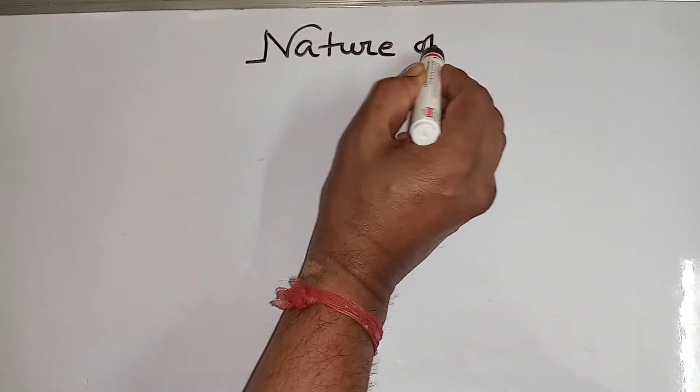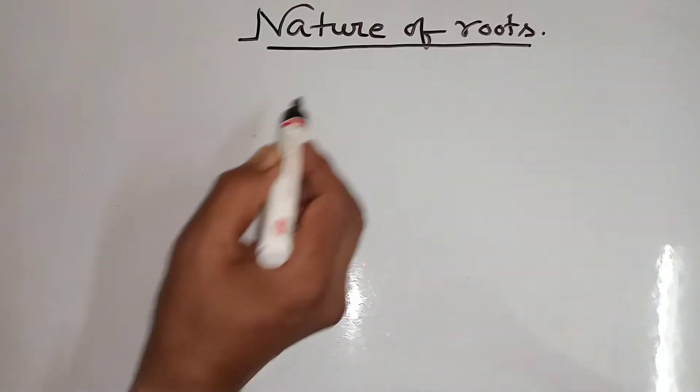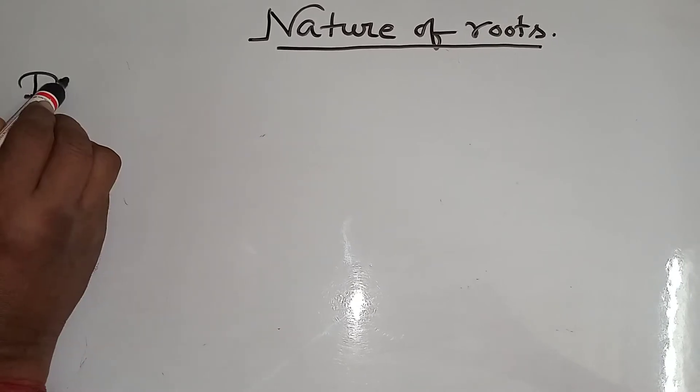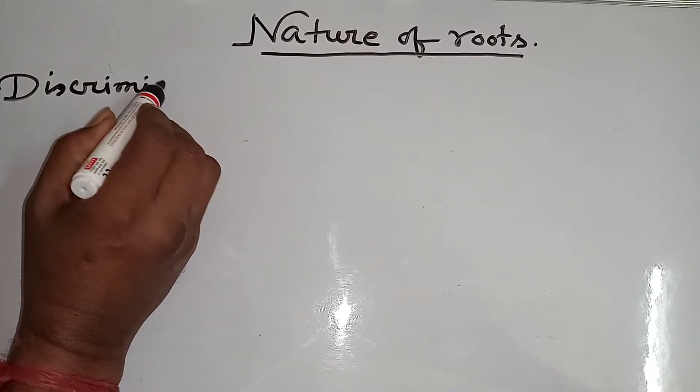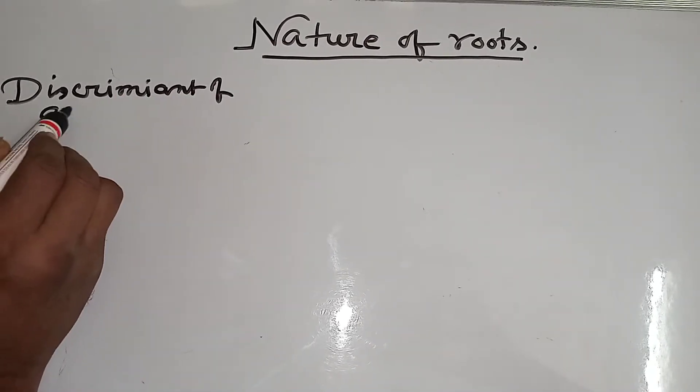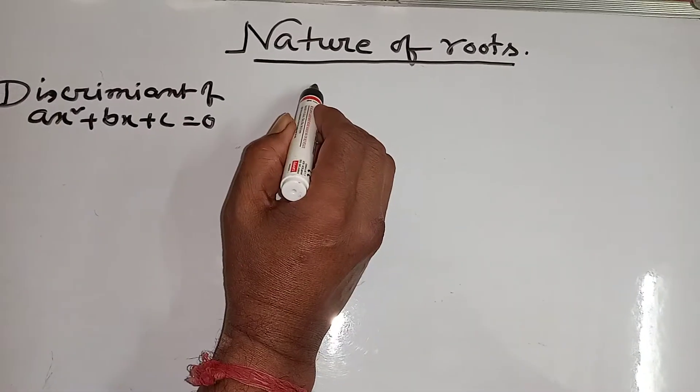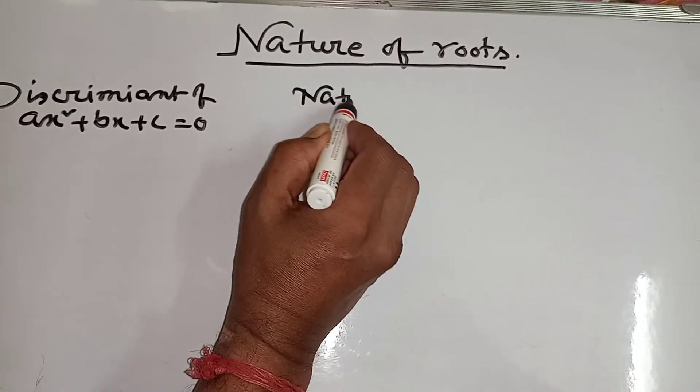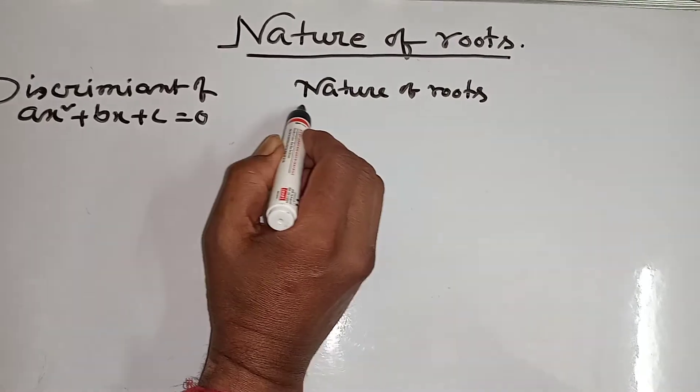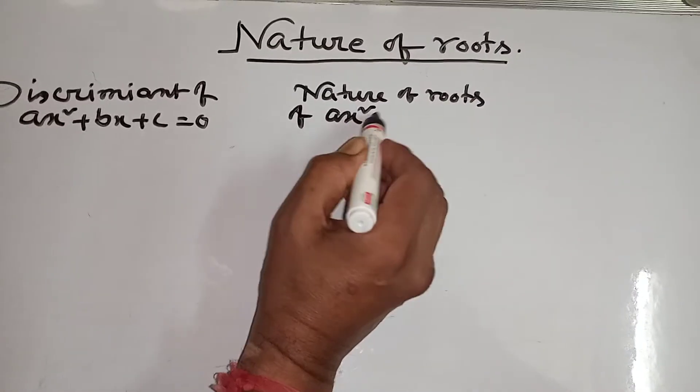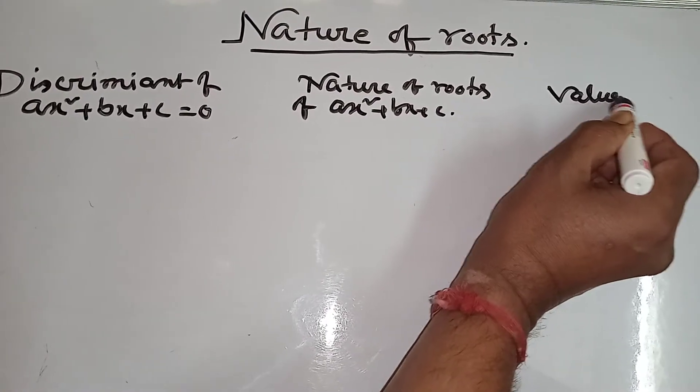Nature of roots. This is part of quadratic equations. For x squared plus bx plus c equal to 0, we'll examine the nature of roots and value of roots.